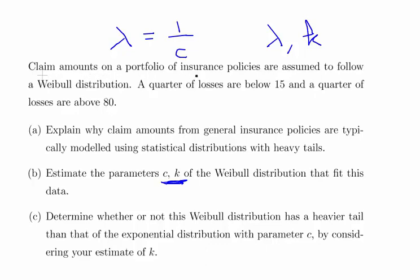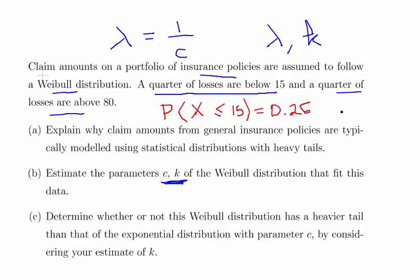So claim amounts in a portfolio of insurance policies are assumed to follow a Weibull distribution. A quarter of the losses are below 15 and a quarter of the losses are above 80. The probability of X where X is a Weibull random variable less than or equal to 15 equals 0.25 and likewise the probability that X is greater than 80 is 0.25 as well.